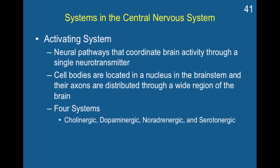These systems reflect very complex behaviors mediated by one neurotransmitter. The cell bodies of these activating systems tend to be located in a nucleus in the brain stem, and their axons are distributed through a wide region of the brain — reflecting more global connectivity. There are four systems corresponding to four neurotransmitters: the cholinergic system, the dopaminergic system, the noradrenergic system, and the serotonergic system.